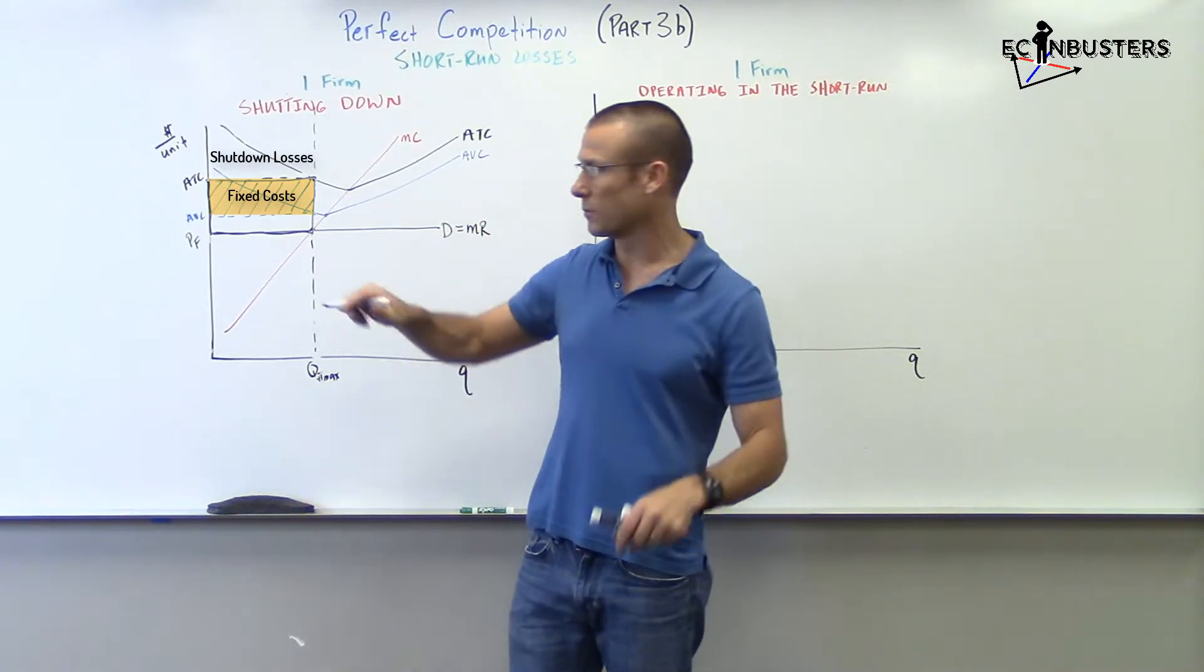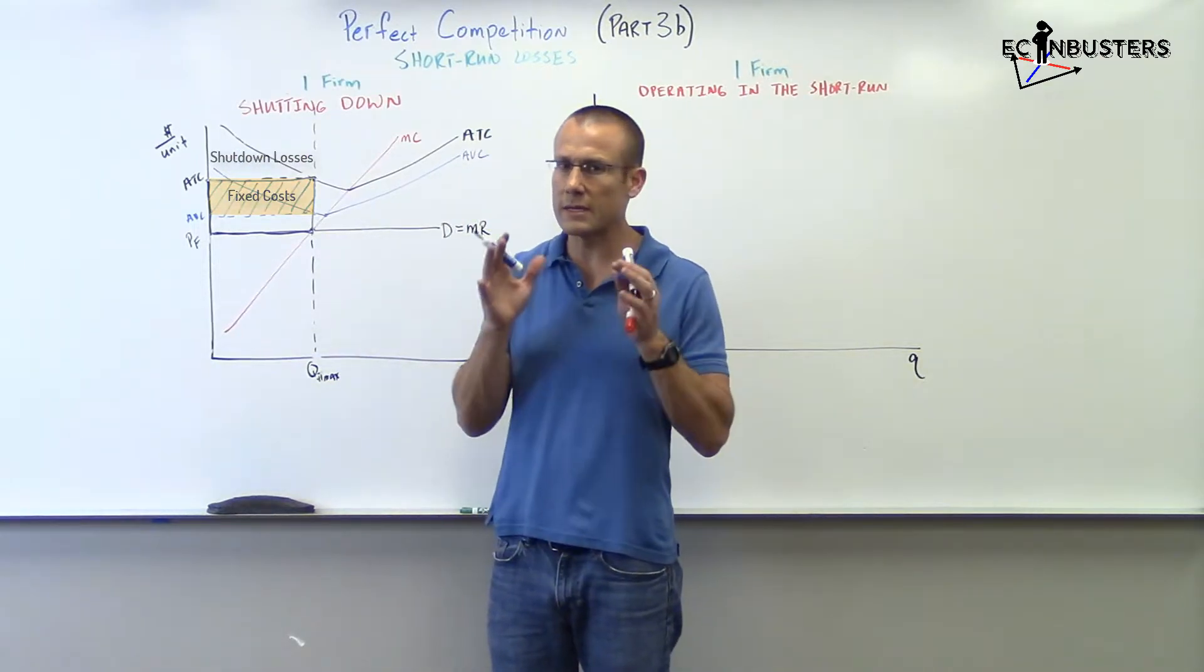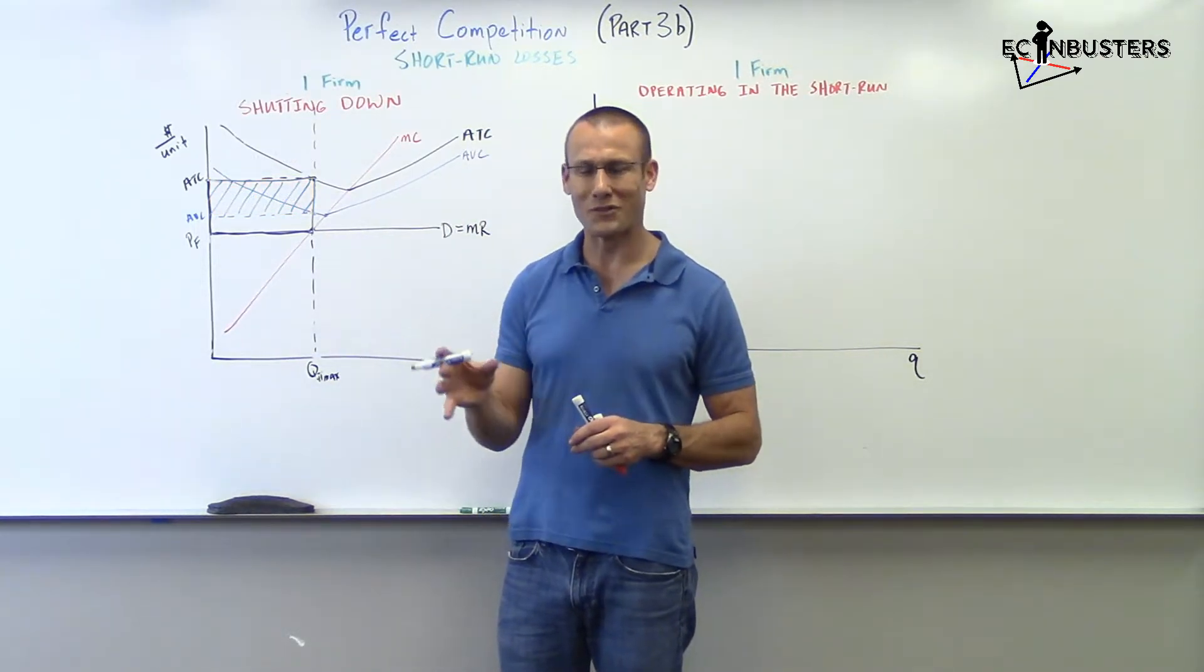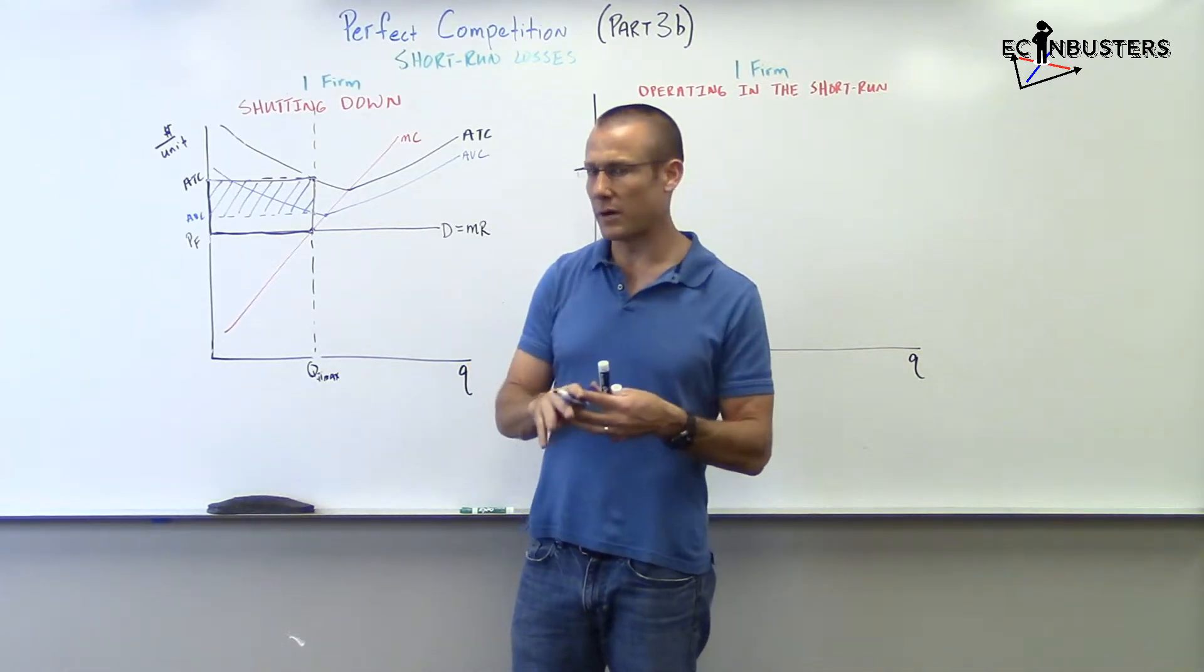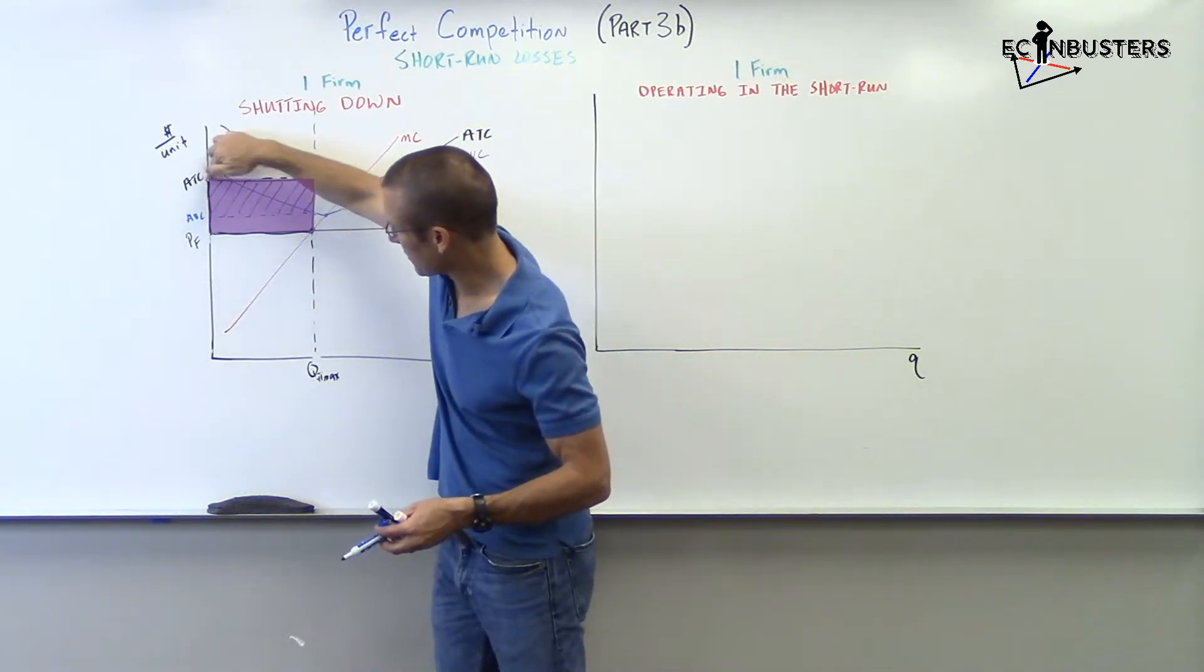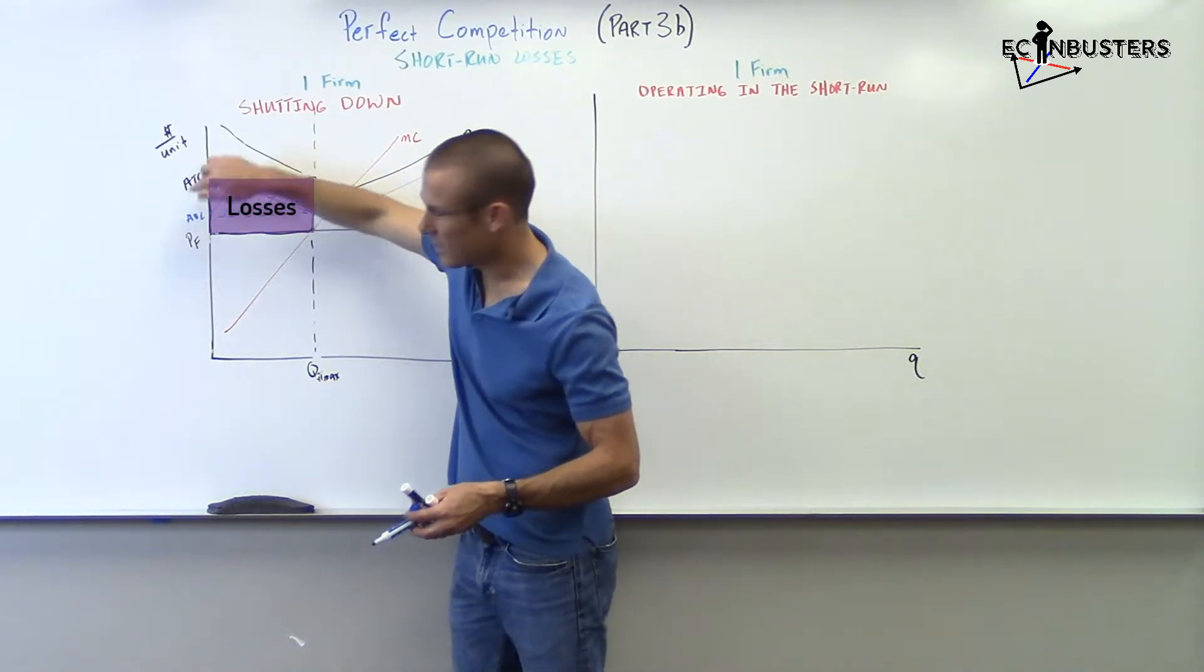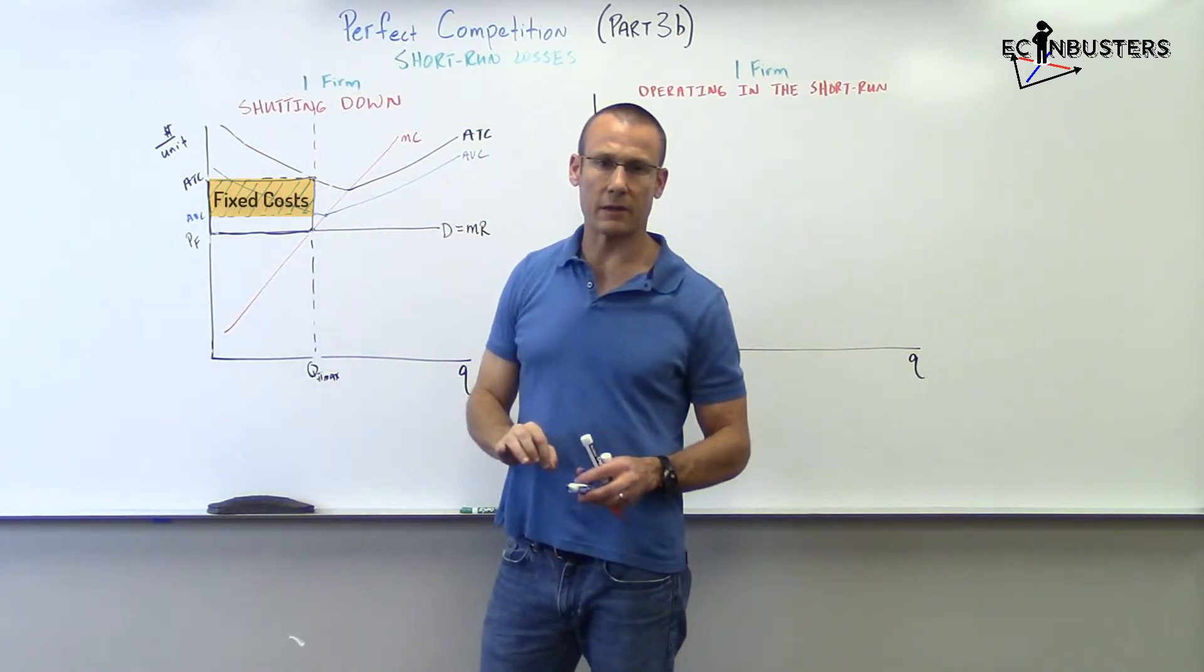You take the average fixed cost times the quantity, and what do you have? You have fixed cost. Let me go ahead and mark that. This rectangle are the losses that you will incur if you shut down. For sure, you will incur those. Remember, fixed costs are costs even if we shut down. They're sunk costs. We've already incurred them.